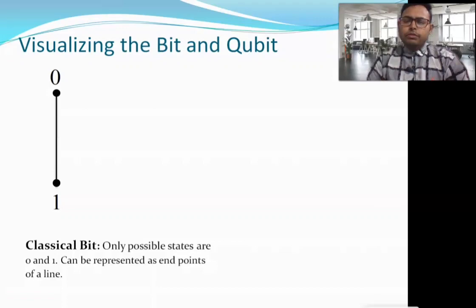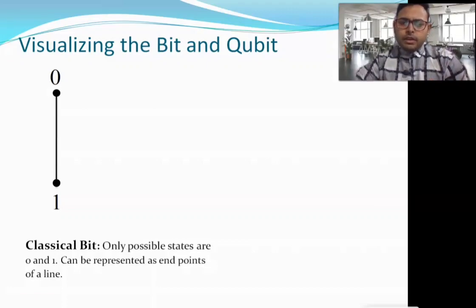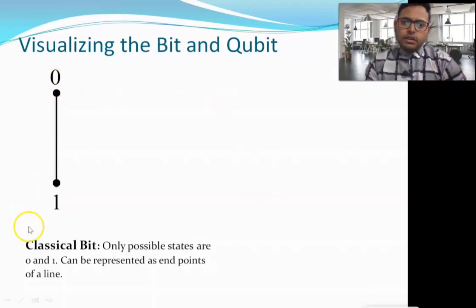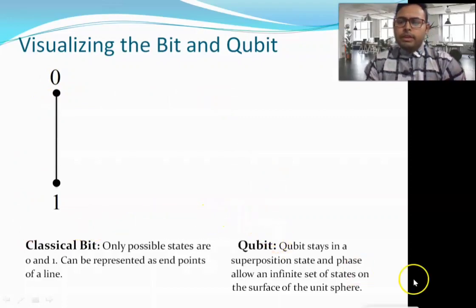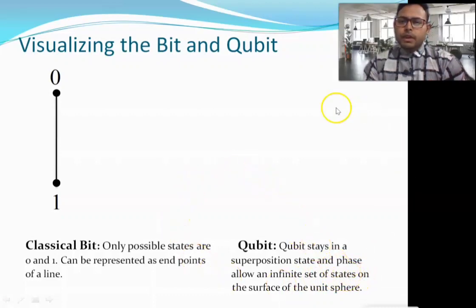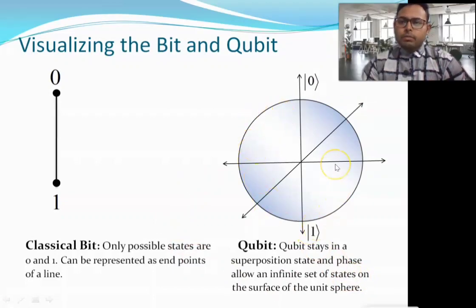To visualize a classical bit, we can represent the possible values 0 and 1 as points on a line. On the other hand, for a qubit in a superposition state, we can use a phase or angle which allows an infinite set of states on the surface of the unit sphere — which we call the Bloch sphere.